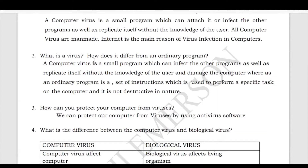The next question is: what is a virus and how does it differ from an ordinary program? A computer virus is a small program which can infect other programs, replicate itself without the user's knowledge, and damage the computer. Whereas an ordinary program is a set of instructions used to perform a specific task on the computer, and it is not destructive in nature — that's the main point.